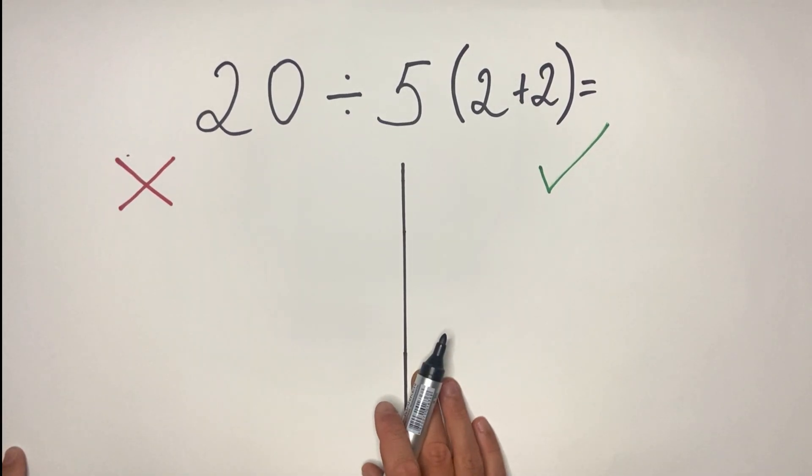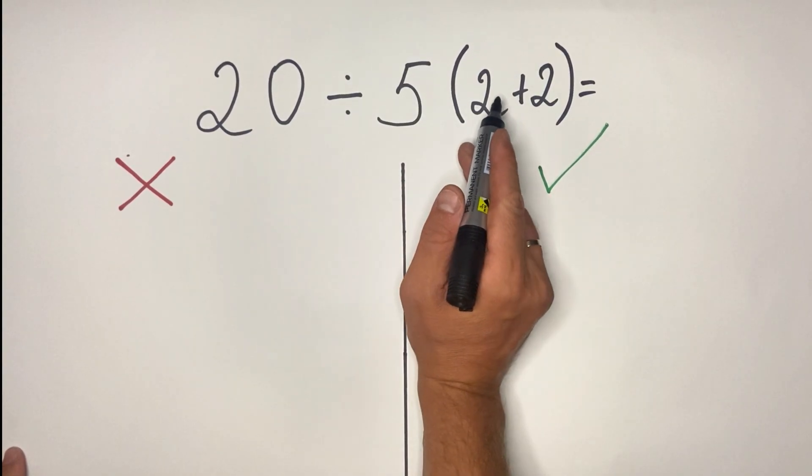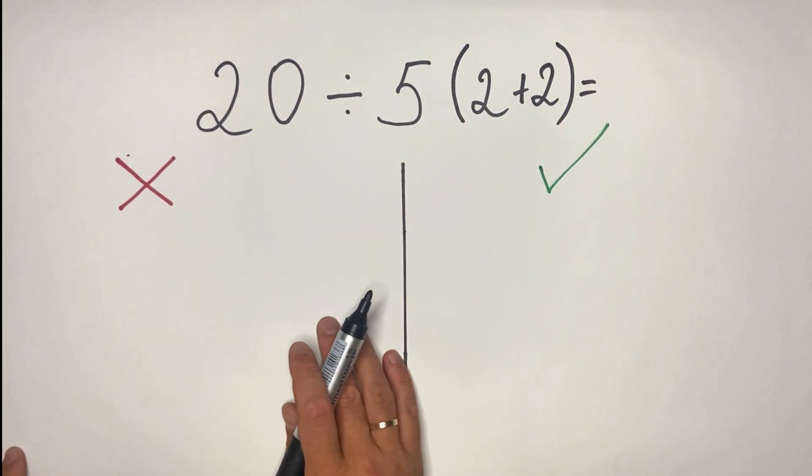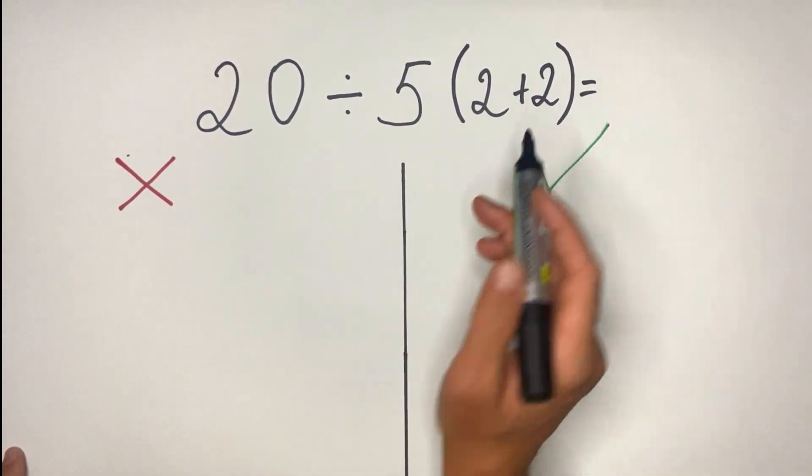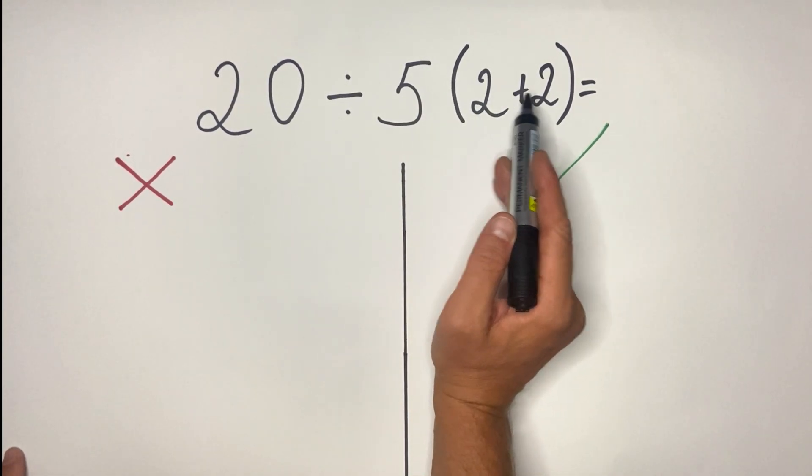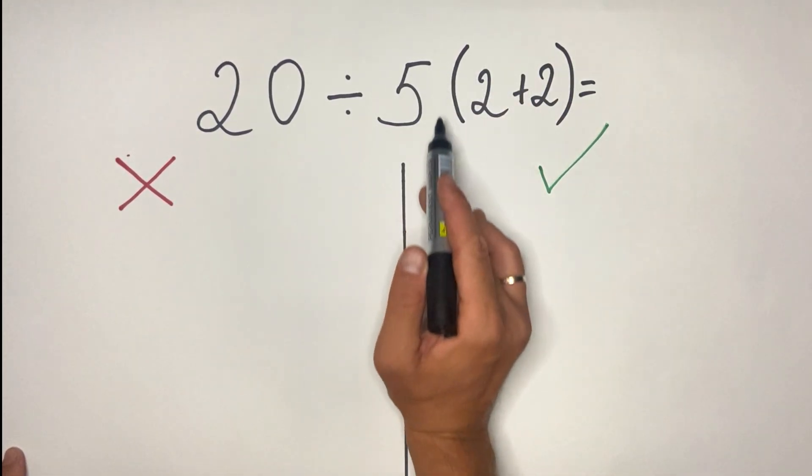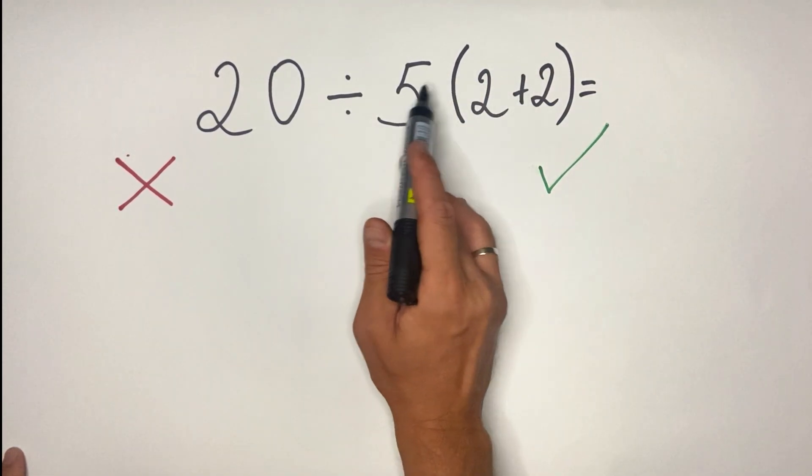Hello everyone, so we have the following equation: 20 divided by 5 multiplied by 2 plus 2 in parentheses. Most will say that the result is 1, but they're wrong. Why are they wrong? Because they treat 5 multiplied by 2 plus 2 as one thing. So basically they do 2 plus 2 equals 4, then they multiply.